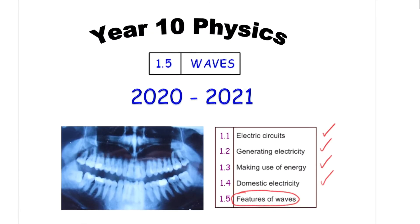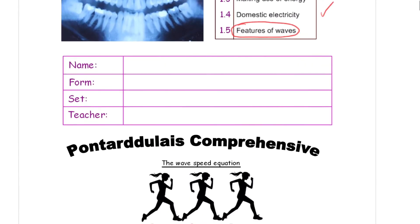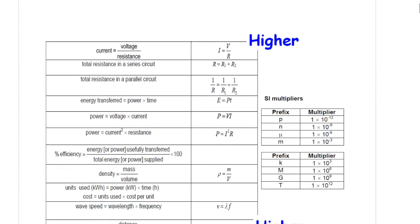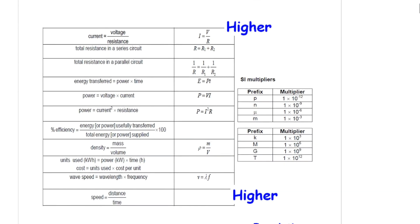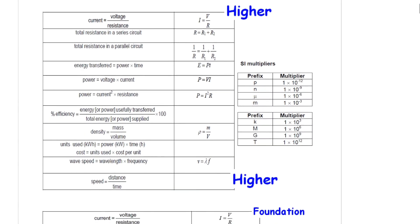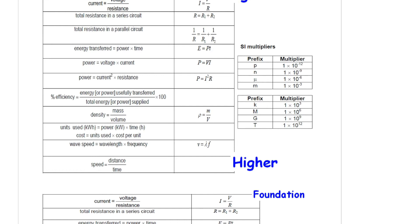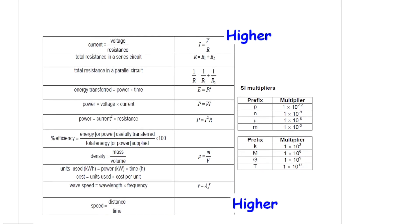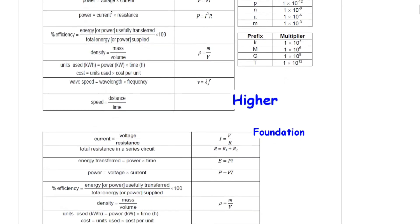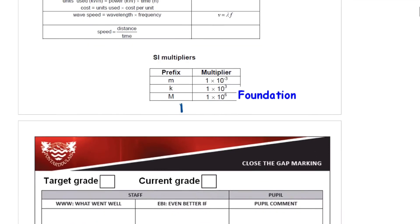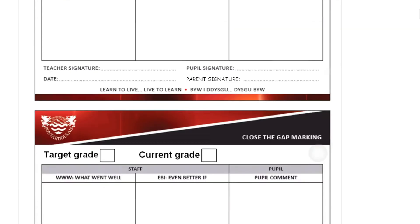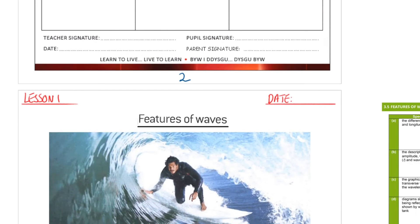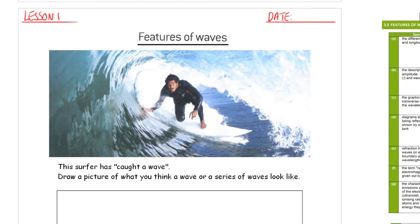So this is the front of your booklet. Please make sure you fill in your name, form, set and teacher. As usual, page 1 is what you would see on the inside front cover of your examination paper. It's two parts to it — you have the equations on the left and the SI multipliers on the right hand side, both for higher and foundation. Page 2 is for the Closer Gap feedback from your teachers, and we're going to start the day on page 3.